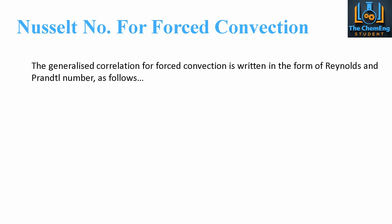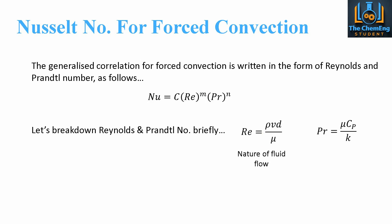If we consider forced convection first, then the generalized correlation for forced convection is written in the form of Reynolds number as well as Prandtl number. This is a generalized correlation: Nusselt number is equal to c, Reynolds number to the power m, times Prandtl number to the power n. If we break these down into their individual components, then the Reynolds value is given by rho vd over mu, and Prandtl is given by mu cp over k. The Reynolds number takes into account the nature of the fluid flow, i.e. it will determine whether or not we have laminar or turbulent flow. Whereas the Prandtl will give us the ratio between the momentum to the thermal diffusivity. We can clearly see that the measurable velocity features in the Reynolds number. If we didn't know or have a measurable velocity, we couldn't use Reynolds number.